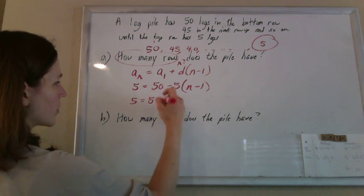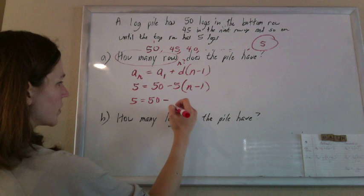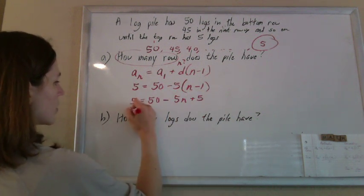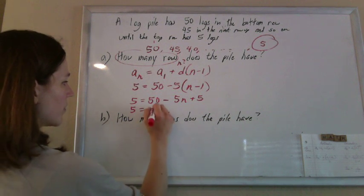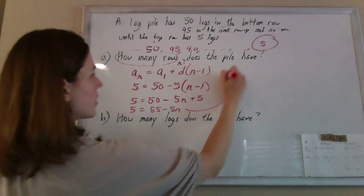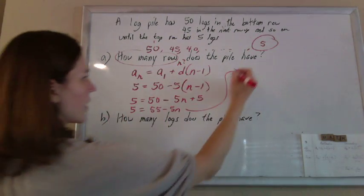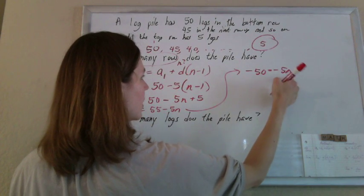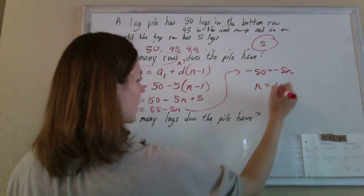So 5 equals 50 minus 5n plus 5, so 5 equals 55 minus 5n. If I subtract 55 from both sides, I get negative 50 equals negative 5n, divide by negative 5, I get n is 10.